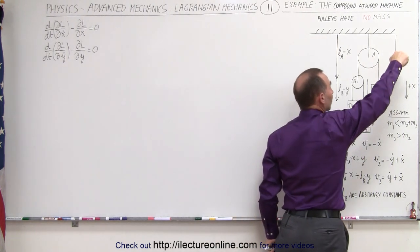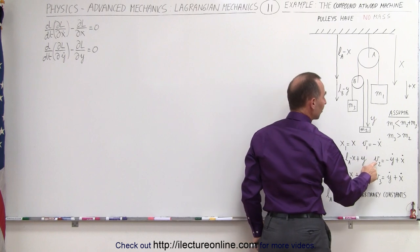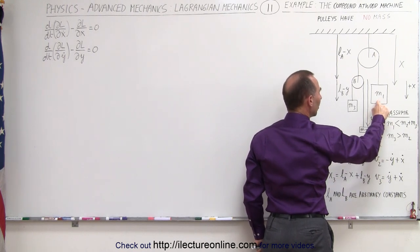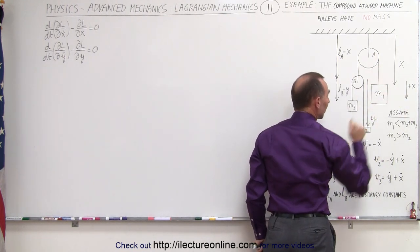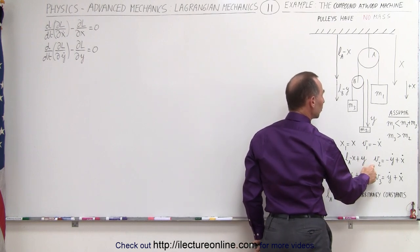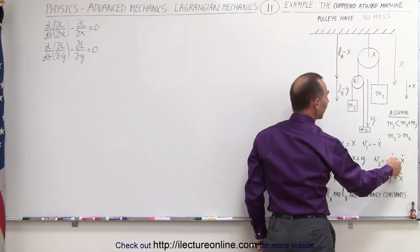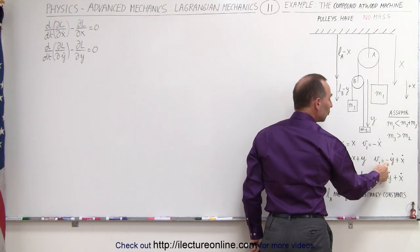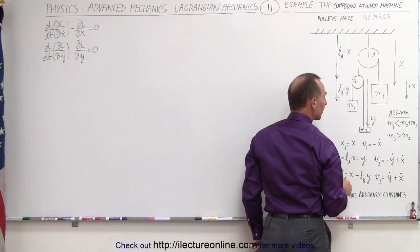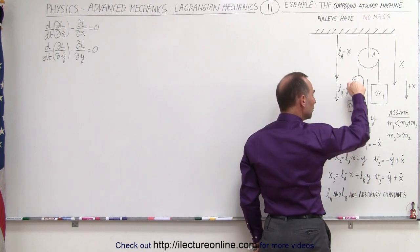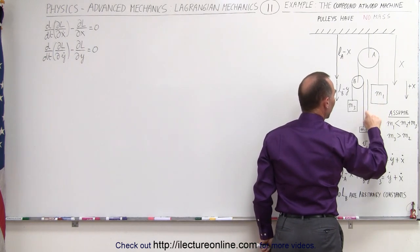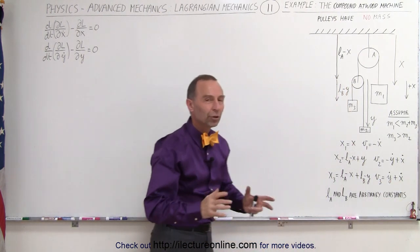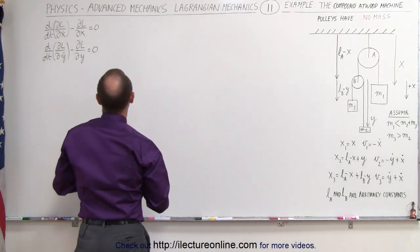The positive x and positive y directions are both downward. V1 equals negative x-dot, since we expect M1 to move upward, which is the negative direction. V2 has components: positive x-dot (moving down in x) and negative y-dot (moving up relative to y). V3 has both positive x-dot and positive y-dot, since it moves downward in both coordinates. Now we have all variables defined, so let's work out the Lagrangian.